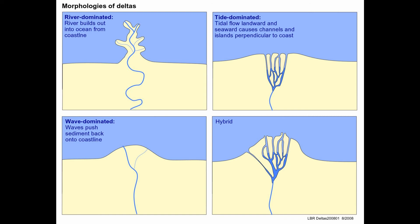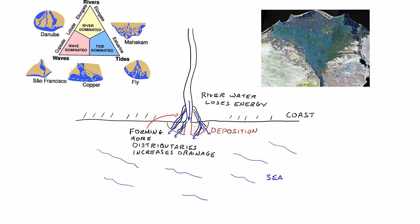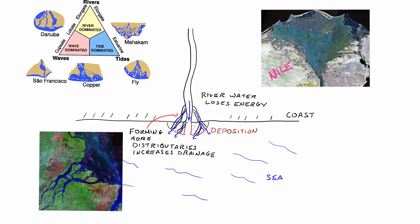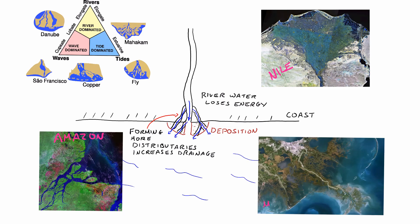We can see in this following diagram some examples. The river Nile is a hybrid delta, whereas the Amazon is more a delta that is dominated by tides, and finally the river Mississippi is dominated by the river itself.